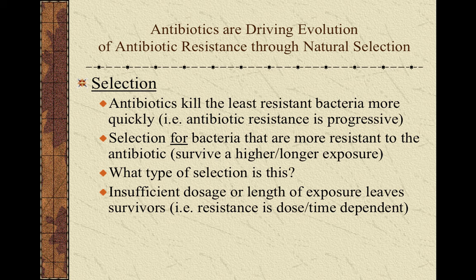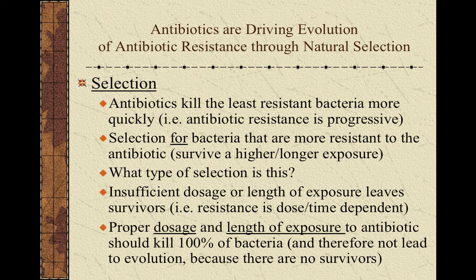For practical purposes, this means if bacteria are exposed to an insufficient dosage or length of exposure — not quite enough to kill all of them — then there will be survivors that are in fact stronger. Antibiotic resistance is both dose dependent and time dependent. So if you want to make sure to kill all the bacteria, it's important to maintain a high dosage and a long enough period of exposure that all of the bacteria are killed. This is the only way to prevent selection, because if there are no survivors, then even the strongest do not pass on their genes.